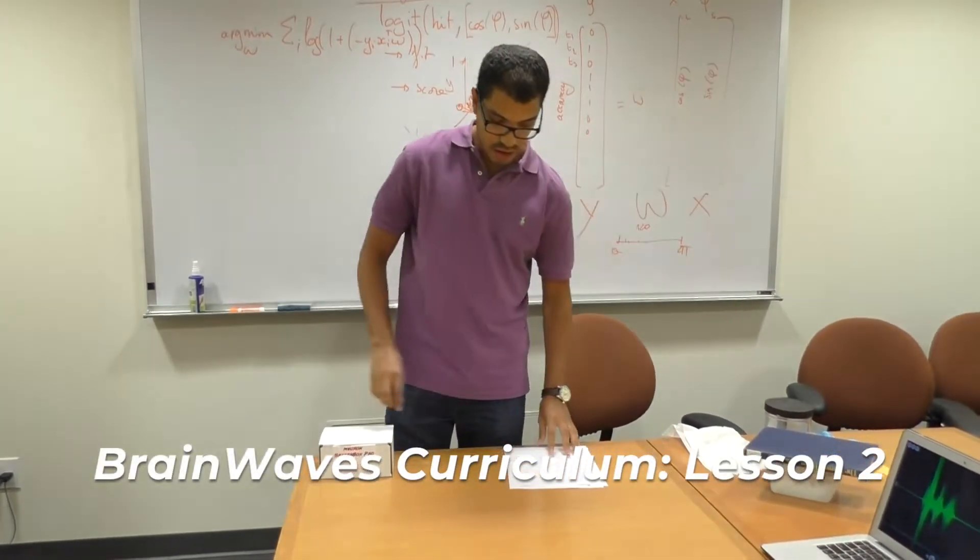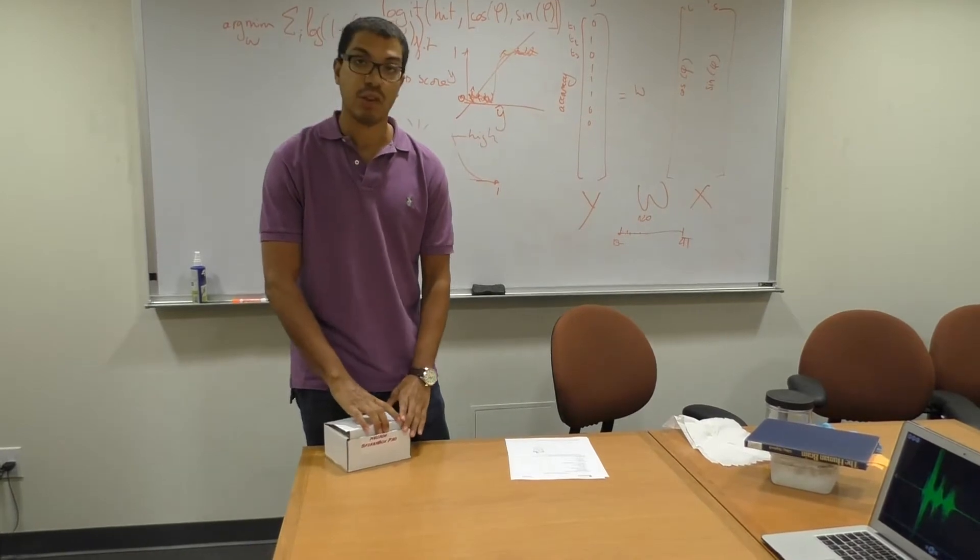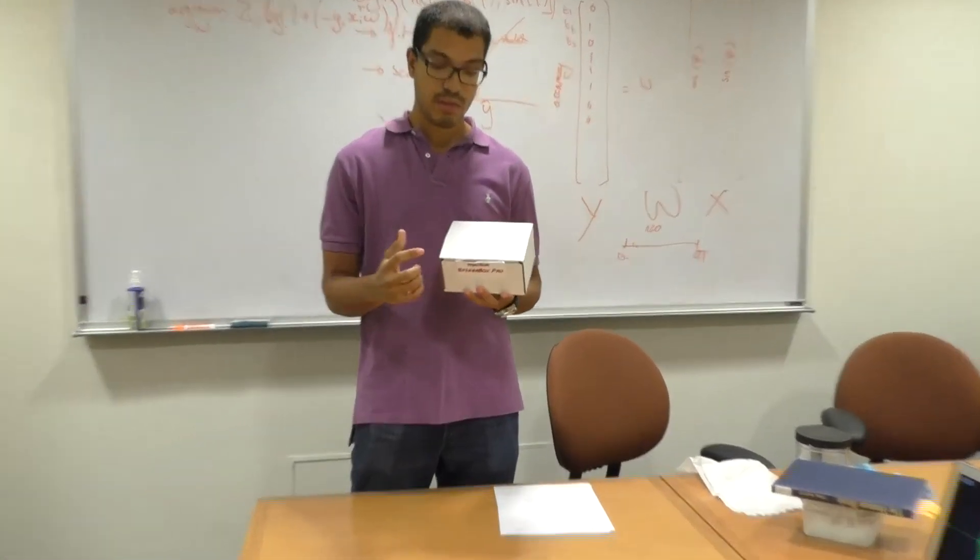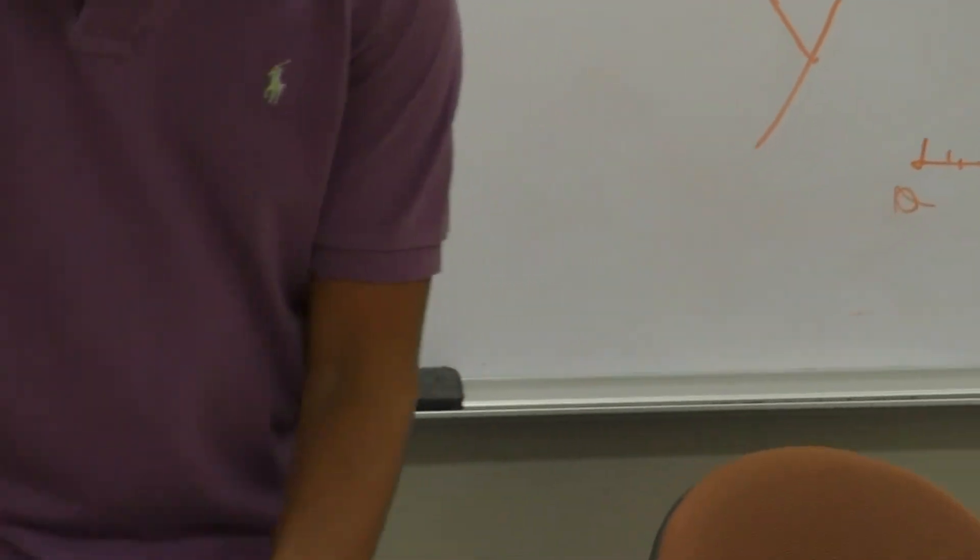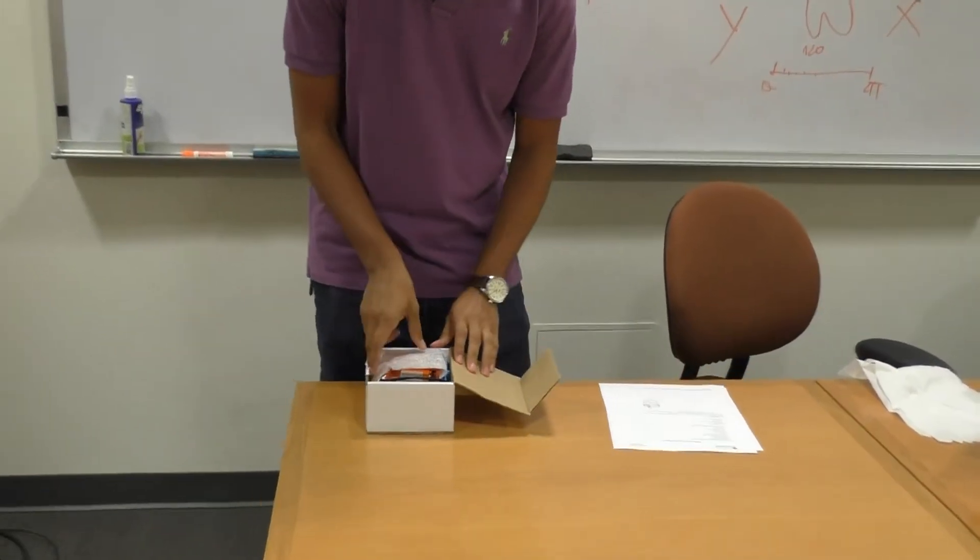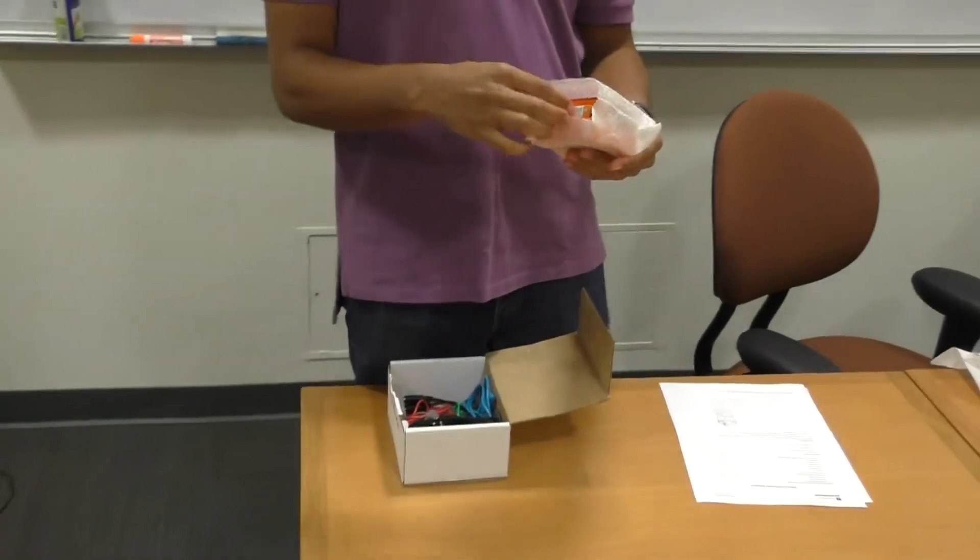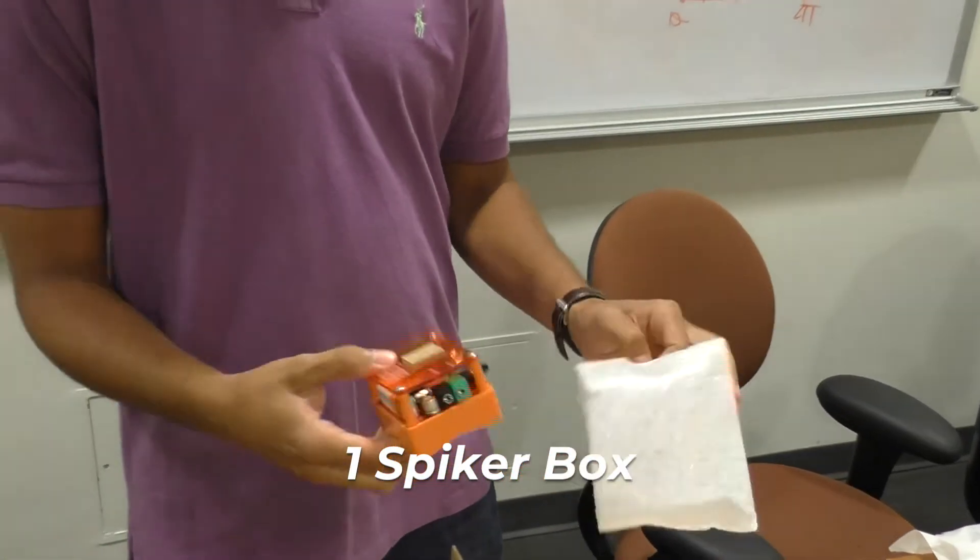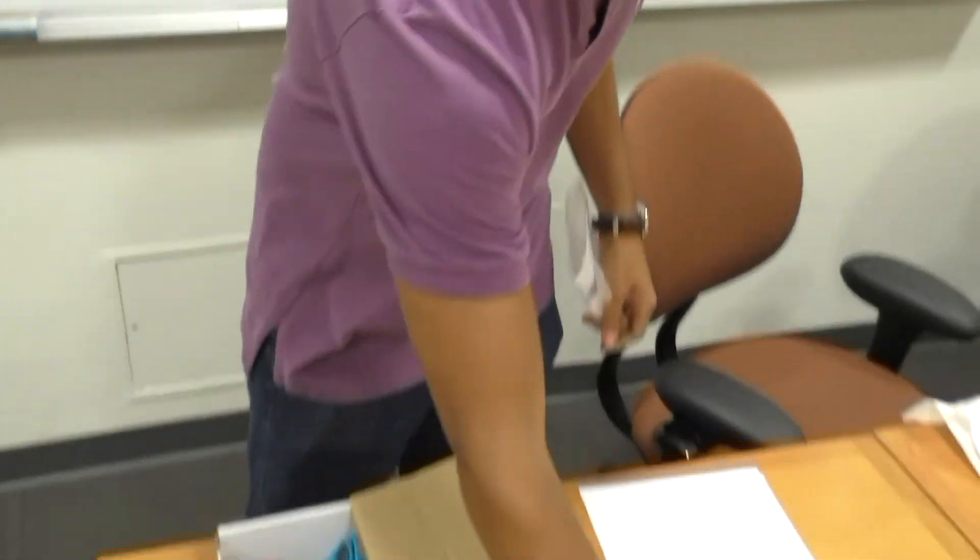So the first thing on this handout is a list of everything you'll need. Everything should be included in this nice box. This is the box for the SpykerBox Pro. So I'll take out each item individually. You should have one SpykerBox that looks just like this.